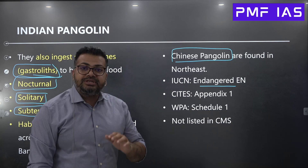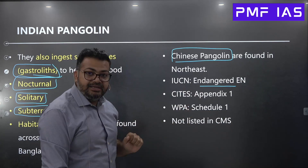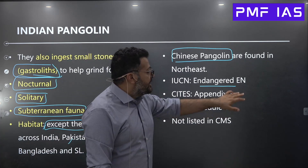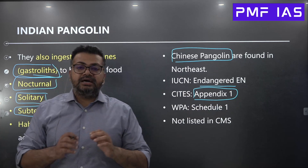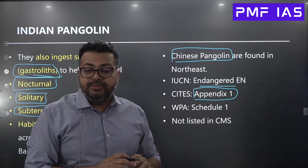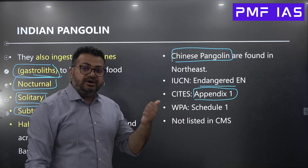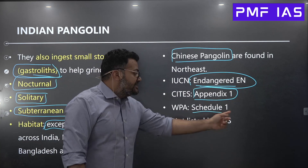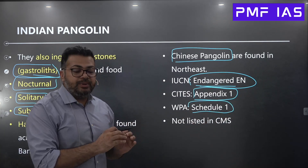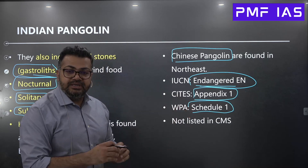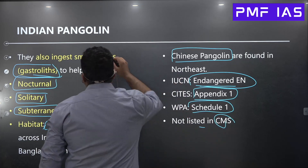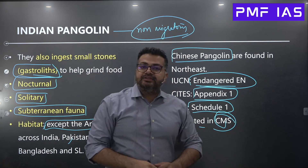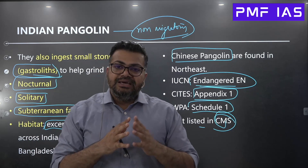Regarding their conservation status: under the IUCN, Indian pangolins are currently considered Endangered, meaning their population has already declined by more than 70%. Under CITES (Convention on International Trade in Endangered Species of Wild Flora and Fauna), they are listed under Appendix I, meaning they are species that are traded but also threatened. Under India's Wildlife Protection Act, they are listed in Schedule I, meaning absolute protection is given and maximum punishment applies for any offenses. They are not listed under the CMS (Convention on Migratory Species) as they are non-migratory animals.